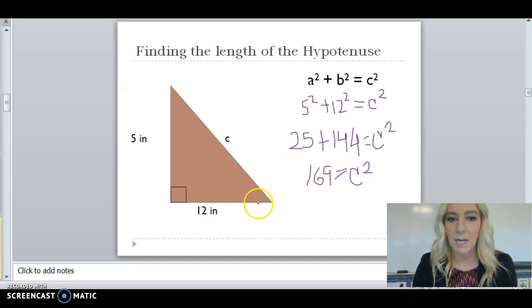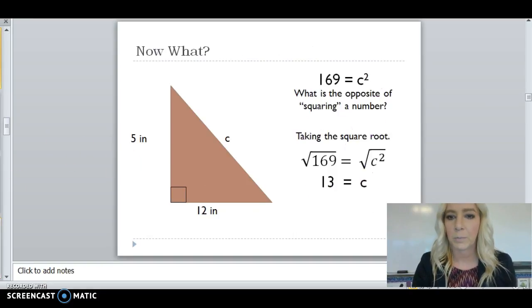Now, 169 isn't the length of C, because we still have a square on this side of my equation. So, 169 is equal to C squared. And going back to inverse operations, what is the opposite of squaring a number? Well, it's taking the square root.